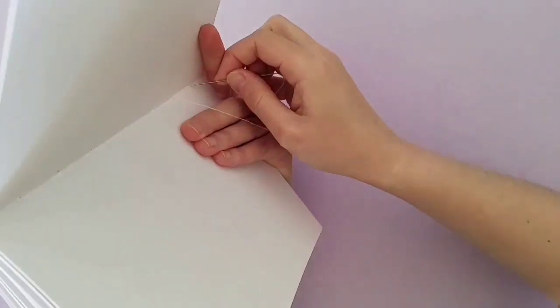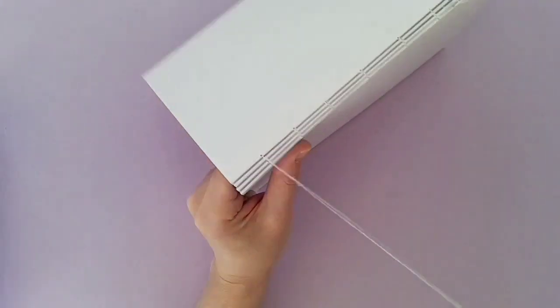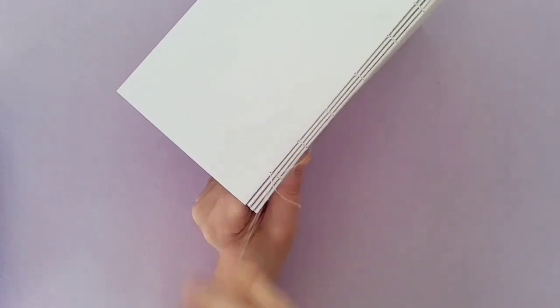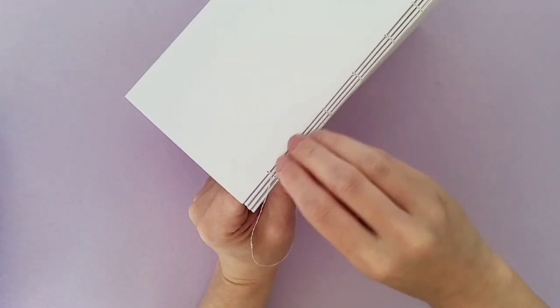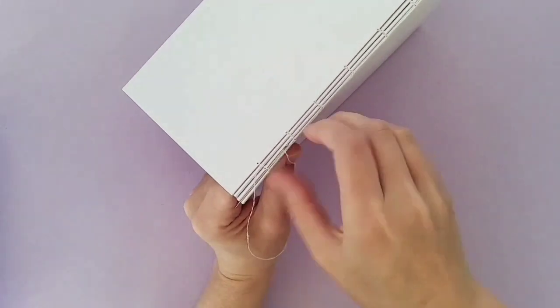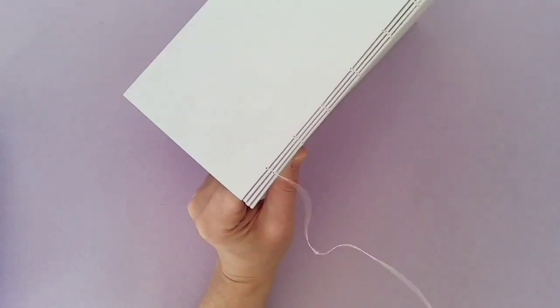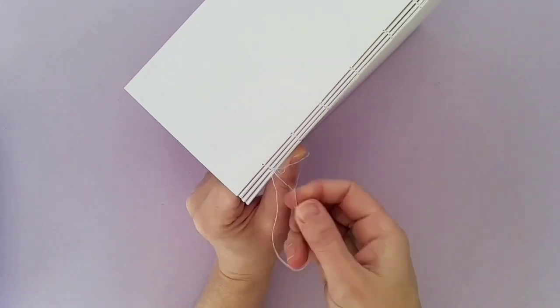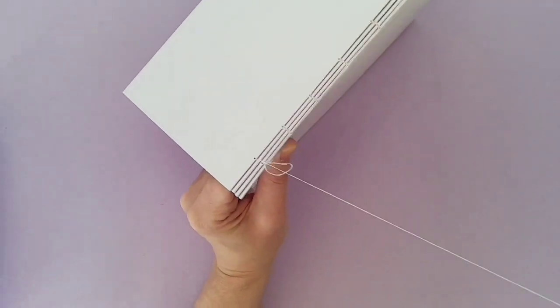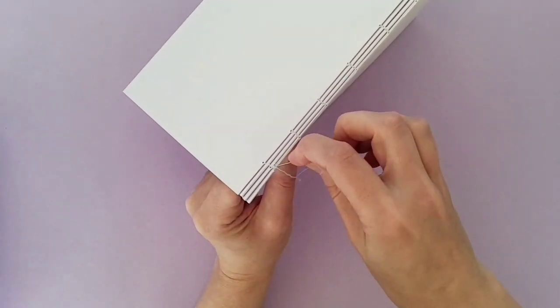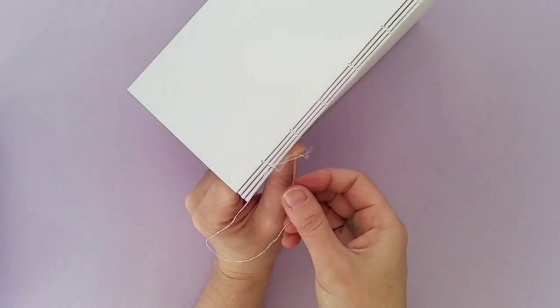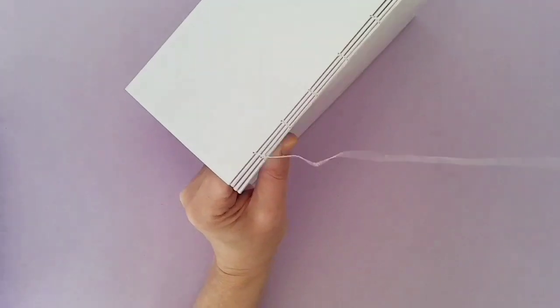Once you've gotten to the end you just need to wrap this end of your string around the previous stitches quite a lot just to secure it. Once this has been done it's actually going to be glued together, so it doesn't really need to be nice and neat on this side. Just kind of secure.